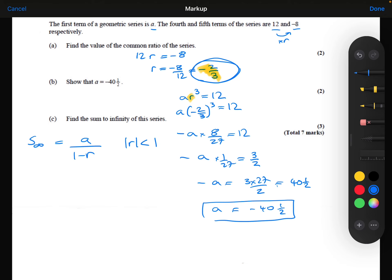All we need to do is substitute A, our first term, which is the minus 40.5, divided by 1 minus the common ratio, which was minus two thirds. And if we put that into our calculator, we find that the sum to infinity is minus 24.3.